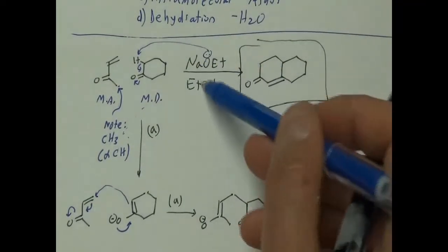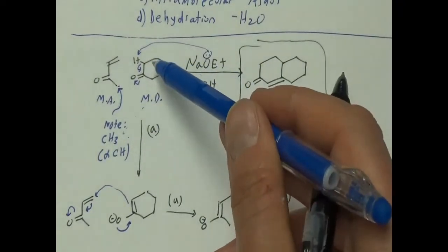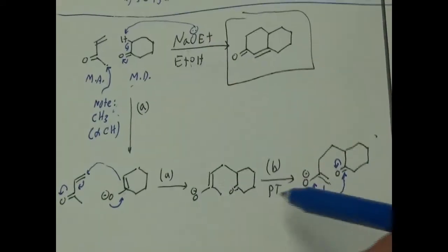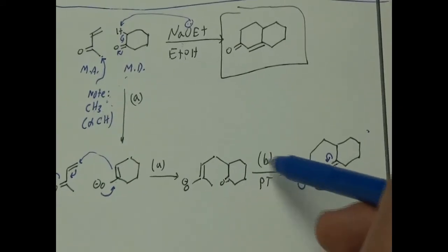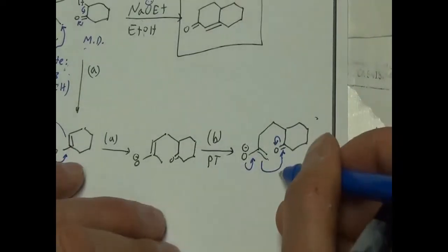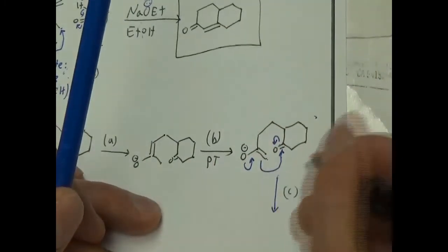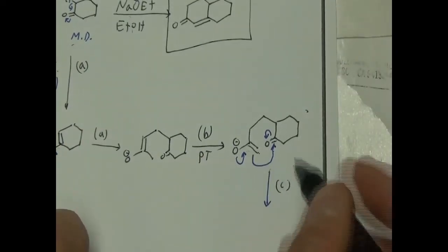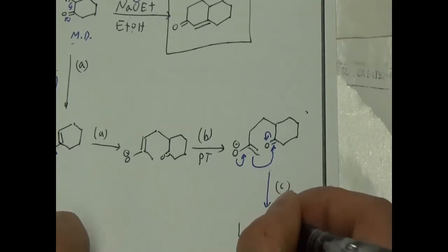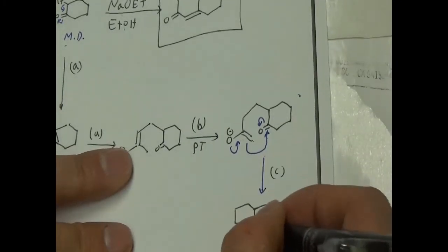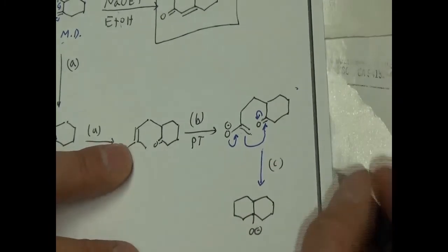So stepping back through this: we started with the Michael reaction — base takes proton, making an enolate, then the enolate attacks. That's step A. We did our PT, which is the re-enolization of the enolate from one side to the other. Then we did the intramolecular aldol — step C. The enolate attacks, forming a six-membered ring, giving an O⁻. We grab a proton from ethanol. That intermediate has a name: it's a beta-hydroxy ketone.